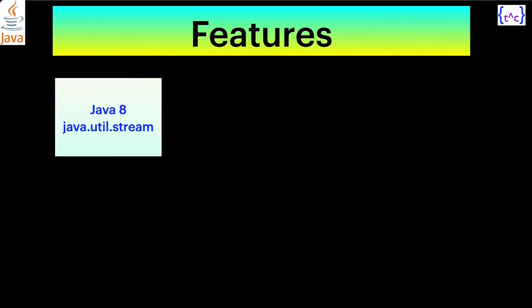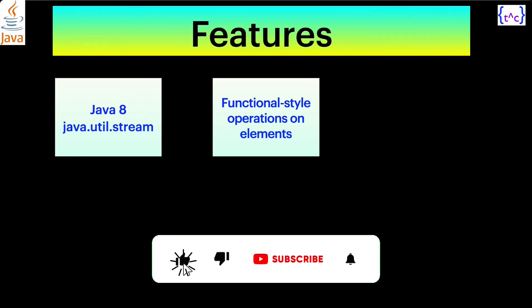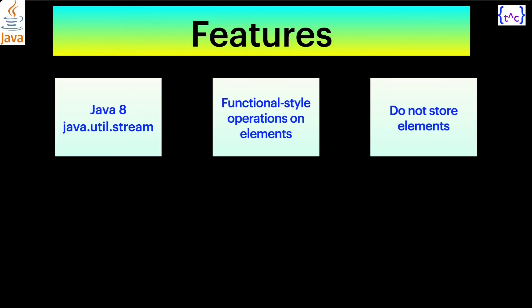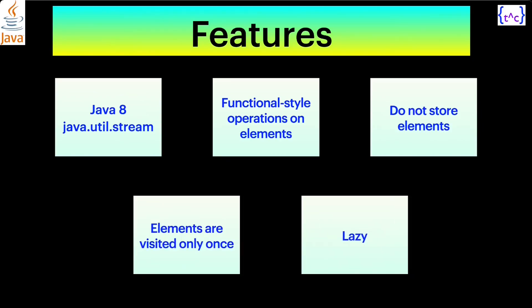Here are some features of Stream API. Most importantly, it is supported in Java 8 and onwards — whichever Java version you are using, you can make use of Java Stream APIs. Its package is java.util.stream. It supports functional style operations on elements, like sorting — you can just call the sort method for sorting the entire stream. Another feature is it doesn't store elements; it takes a sequence from, say, a list, performs the operation, and gives you the output.